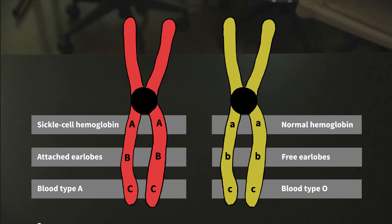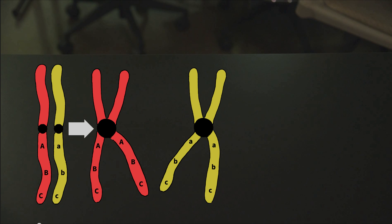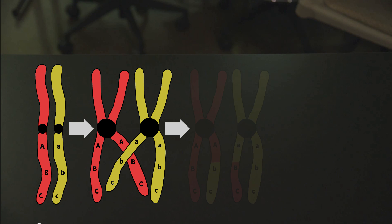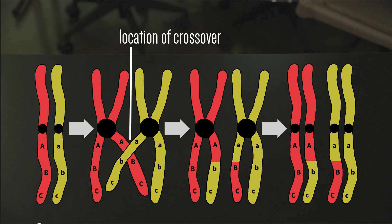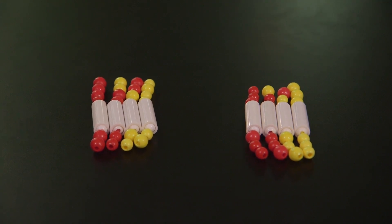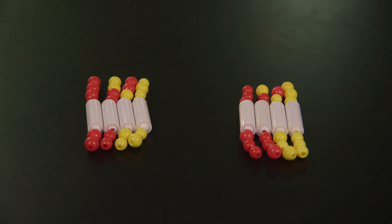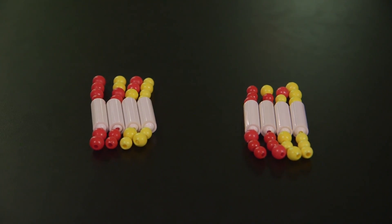In this example, one of the chromosomes has alleles for sickle cell hemoglobin, attached earlobes, and blood type A. The other chromosome has alleles for normal hemoglobin, free earlobes, and blood type O. So the non-sister chromosomes have different alleles, and after crossing over occurs, we can have a unique combination of alleles for these traits on one chromosome. In the bead model, we can see the new set of alleles as a chromosome with red and yellow beads. This means that the organism has recombined the alleles it received from its parents into a new set.